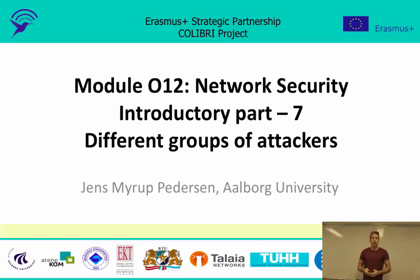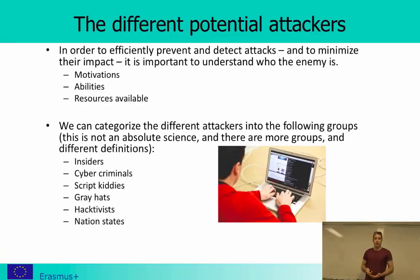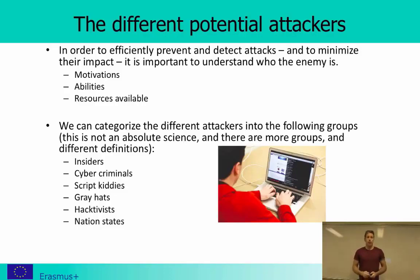Hello everyone and welcome to the last part of the network security introduction, part number seven, where we will be looking at different kinds of attackers. The reason for looking at different attackers is really to understand better who our enemy is. When we know our enemy and their motivations, abilities and resources, we can build a better defense. I will go briefly through six different groups: insiders, cyber criminals, script kiddies, greyhats, hacktivists and nation states.